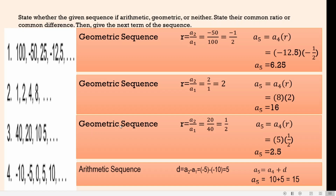For number 3, we have 40, 20, 10, and 5. We're going to get the common ratio since it's a geometric sequence. The second term is 20, and the first term is 40. So 20 divided by 40 — the lowest term for that is 1.5. Therefore, our common ratio is 1.5. To get the next term, which is A sub 5, we're going to multiply A sub 4 times the common ratio. So this will be 5 times 1.5. 5 times 1.5 is equal to 5 over 2 or 2.5. So 2.5 is the next term.